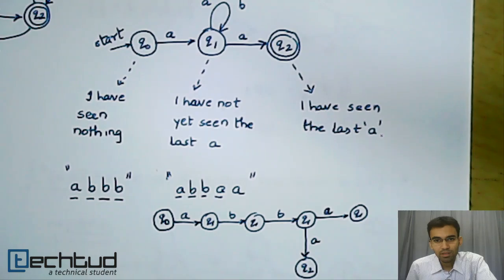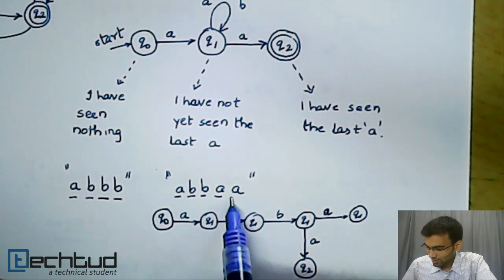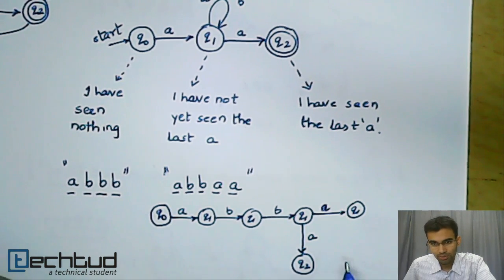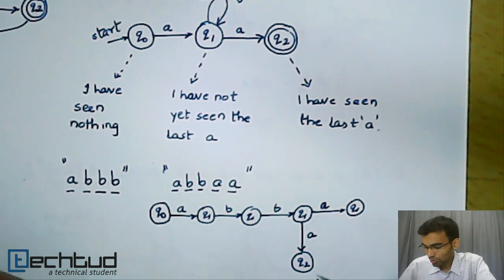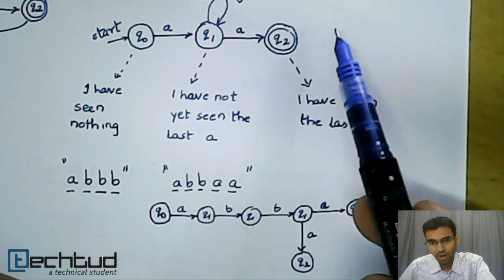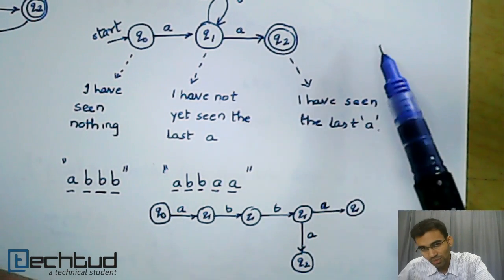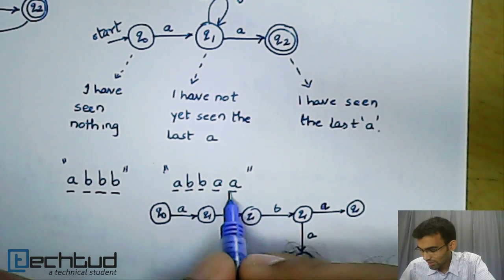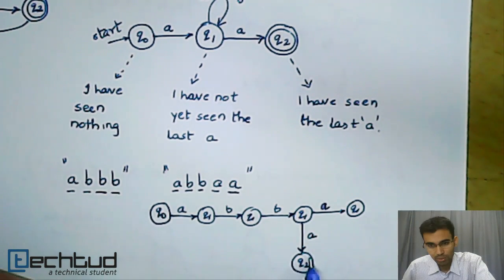The last A, if I get the last A in Q2, it will reject. The reason being that from Q2, there is no transition out on any letter. Specifically, there is no transition out on an A.